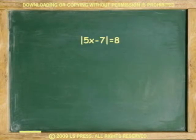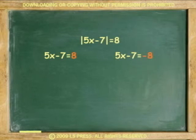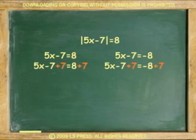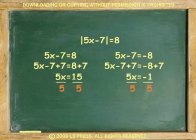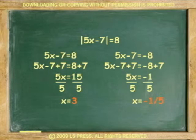One more example: absolute 5x minus 7 equals 8. Here we have to compute for two possibilities — a positive outcome and a negative outcome — that must be computed independently. First, 5x minus 7 equals 8, and 5x minus 7 equals negative 8. Add 7 to both sides, then divide by 5 for each. Two values for x emerge: x equals 3, or x equals negative 1 over 5.